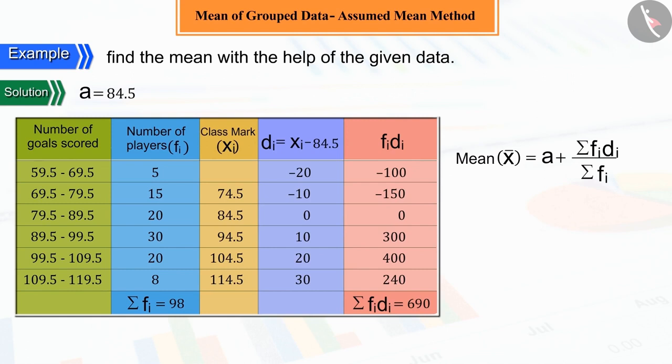On putting the values of assumed mean A, summation fi di and summation fi in the formula of assumed mean method, and solving, the value of mean x is obtained as 91.54.